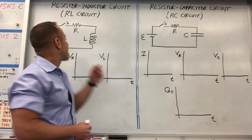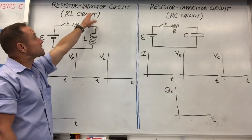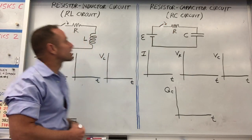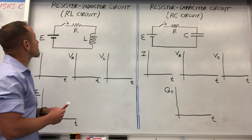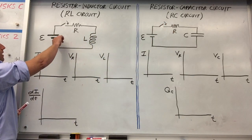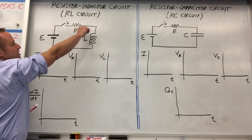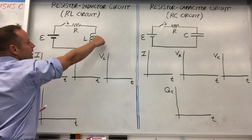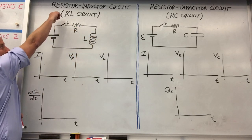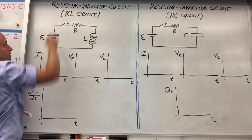This is just a quick summary of the time-dependent behavior of resistor-inductor circuits and resistor-capacitor circuits. Here is a circuit with a battery, resistor, and a coil or inductor. At time t equals zero, you throw the switch closed.